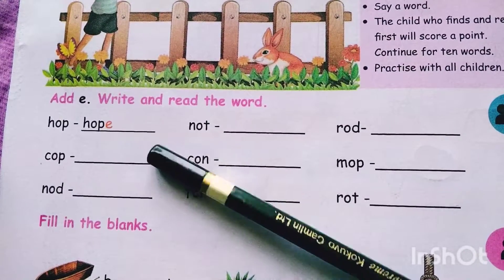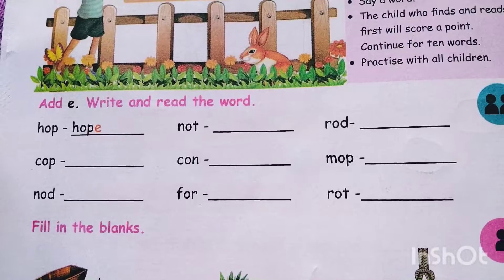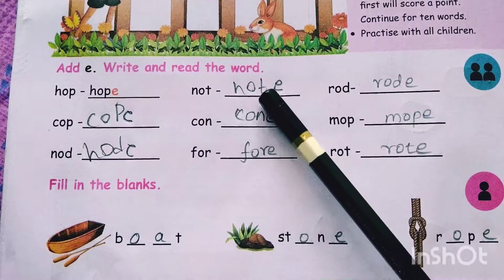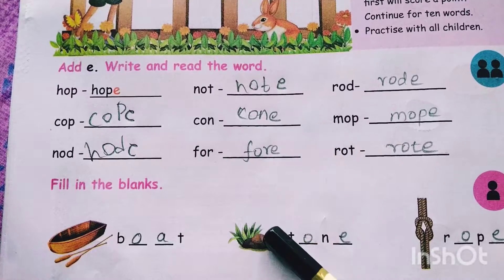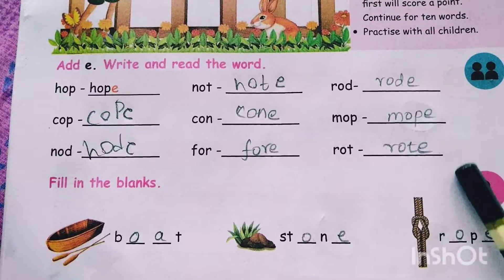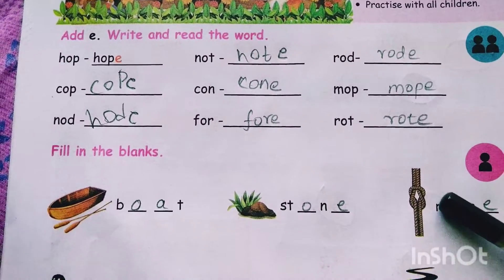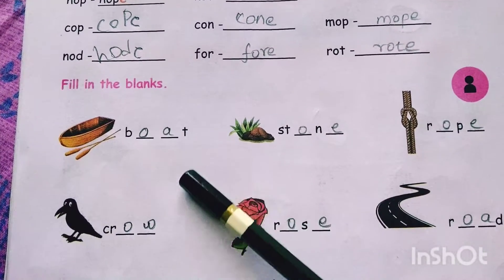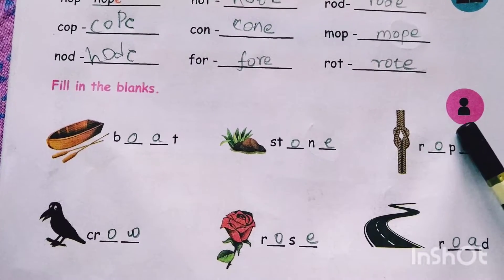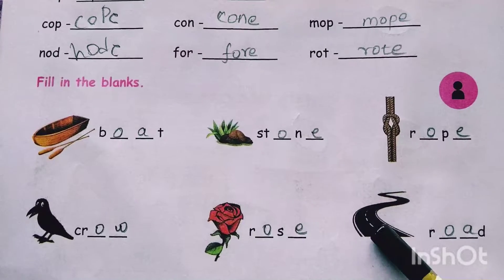Add E — write and read the word. Coat, not, not, corn, for, no, road. Moat, mope, road. Fill in the blanks: boat, stone, rope, crow, road.